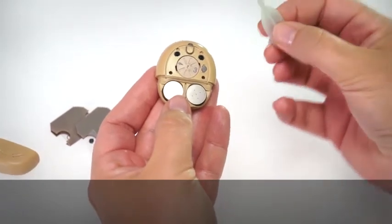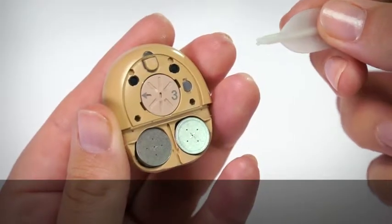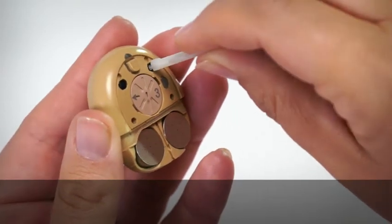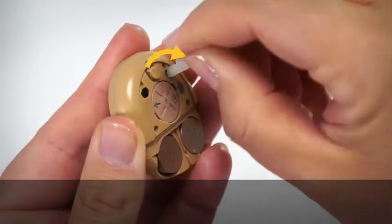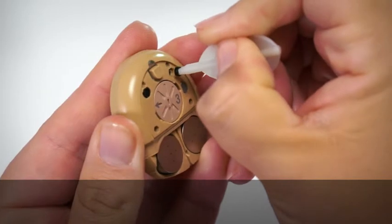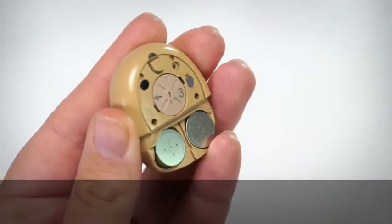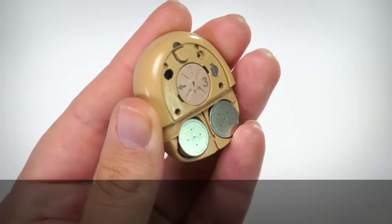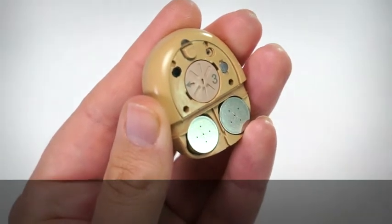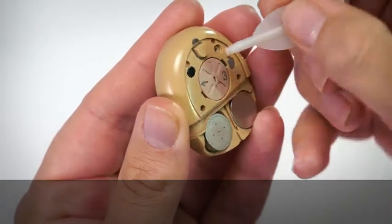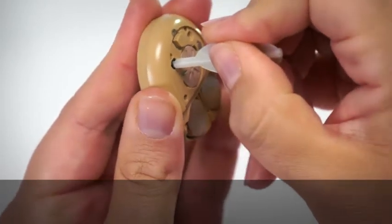Firmly push the tip of the removal tool into the middle of the microphone protector. Turn the tool 90 degrees clockwise and lift out the used microphone protector. Pull the used microphone protector from the tool and discard. Remove the other microphone protector in the same way.